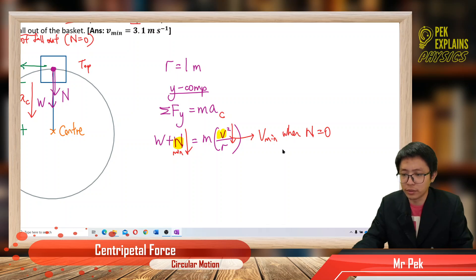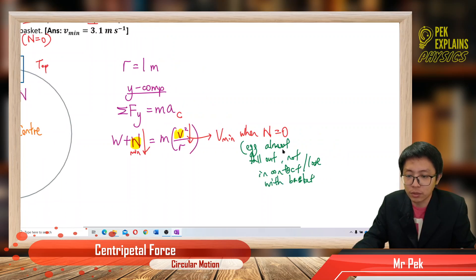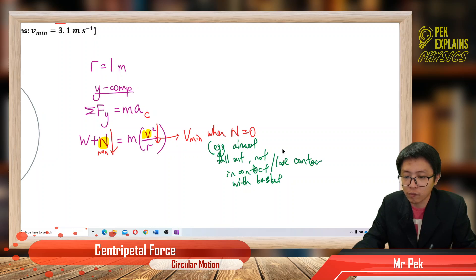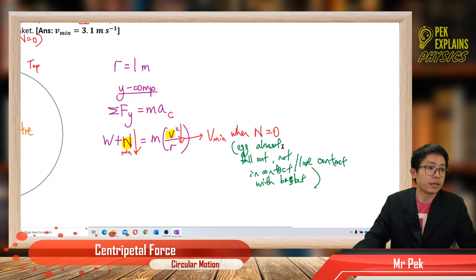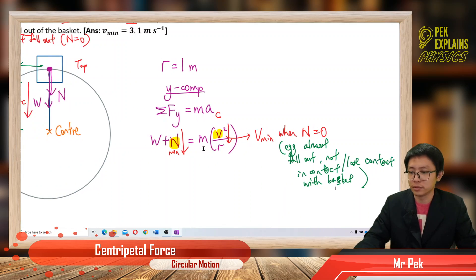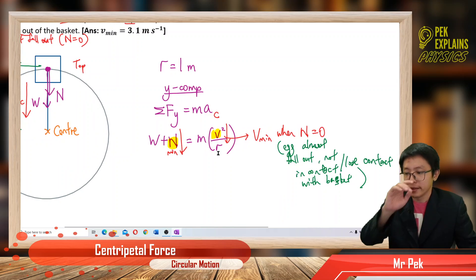Speed minimum when normal force equal to zero. When normal force equal to zero, that means the egg almost fall out, not in contact with basket, or loose contact, loose contact from the basket. No more force, zero.